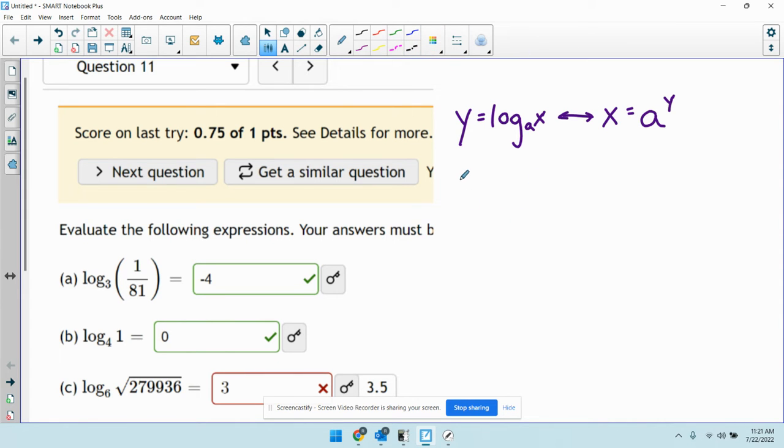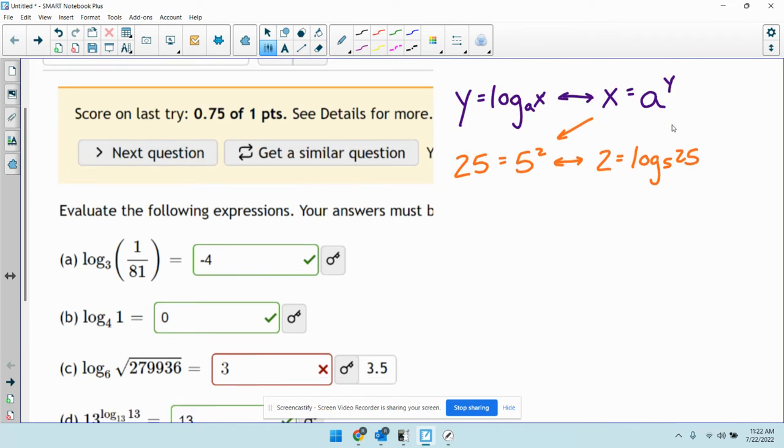Like, everyone probably is comfortable with something like this. If I said 25 equals 5 squared, well, that's in exponential form. I can convert this to log form and get 2 equals log base 5 of 25. So, when you see the log, this is saying this to what power gives me that.